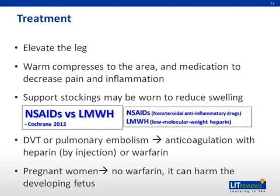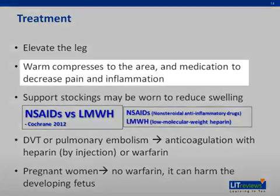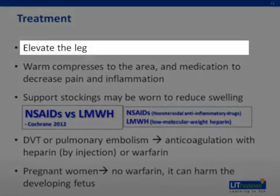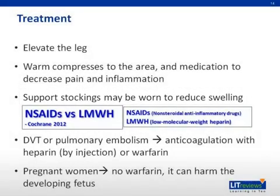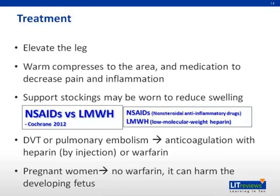The initial treatment for thrombophlebitis includes warm compresses, elevation of the legs, ambulation, and compression stockings. Treatment aims to relieve painful local symptoms and to prevent the development of more serious thromboembolic events. Both low-molecular weight heparin and non-steroidal anti-inflammatories reduced the incidence of extension or recurrence of superficial thrombophlebitis by about 70% compared with placebo, as discussed in a Cochrane review in 2012.